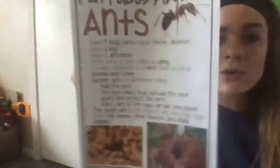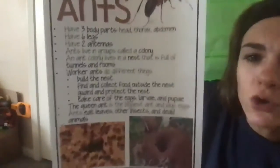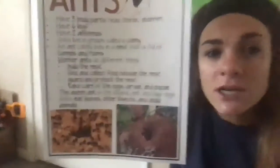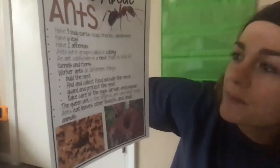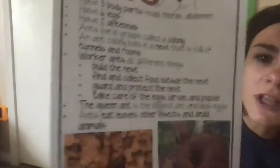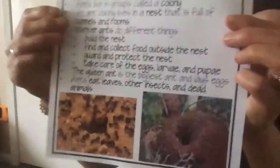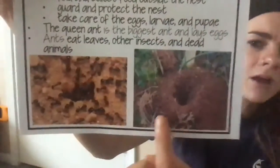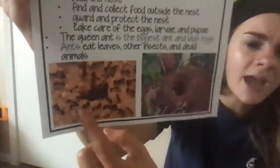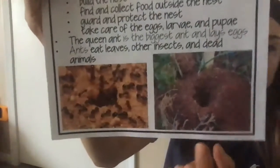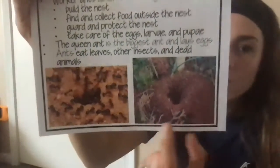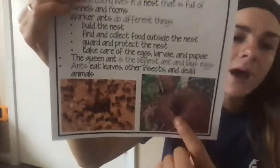Ants have two antennas coming out of their head, and they live in groups called a colony. Yesterday we talked about bees, and bees also live in a colony. An ant colony lives in a nest that's full of tunnels and rooms. This is what an ant colony looks like — you may have seen this in the grass when you're playing outside, or on the sidewalk. It's a little hole that the ants can burrow inside.